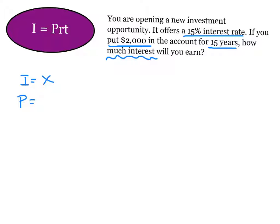P, the principal we put in is $2,000. R, the rate is 15%. But remember, it needs to be in decimal form. So let's change it right now to .15. And time is 15 years. And that's in years, so it's good to go.